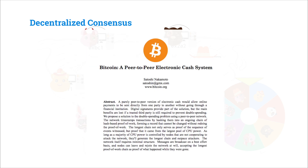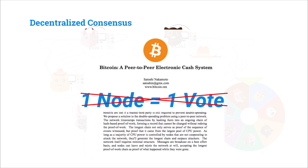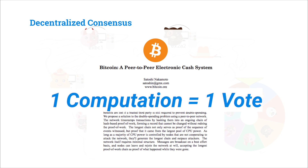One of Satoshi Nakamoto's big innovations in the Bitcoin whitepaper released in 2008 was that rather than giving each node one vote in the system — which could easily be gamed by a sybil attack — he proposed the idea of one computation one vote, or one CPU one vote, or more specifically, one unit of computational power one vote.